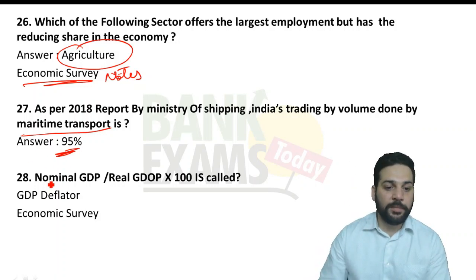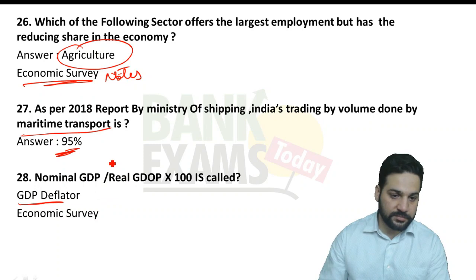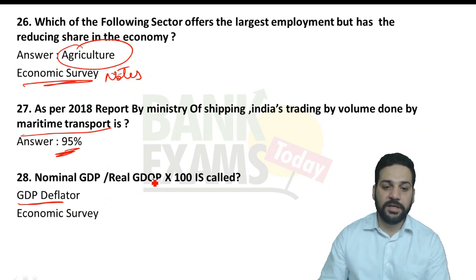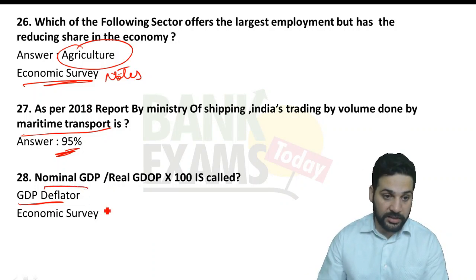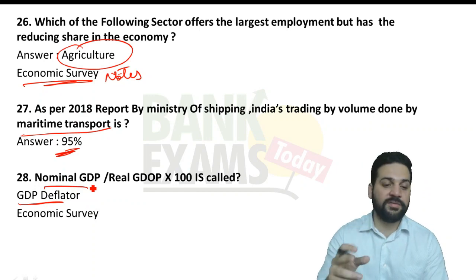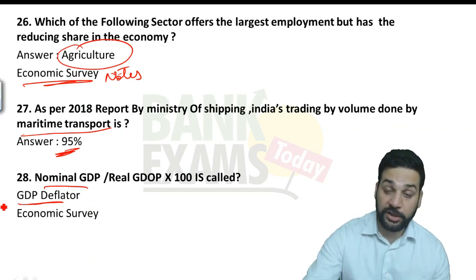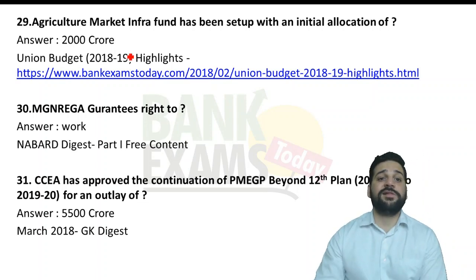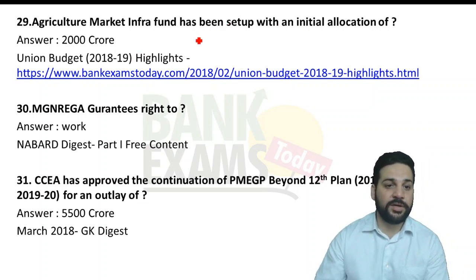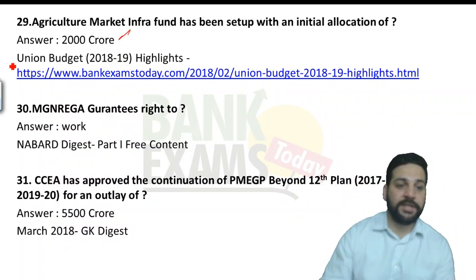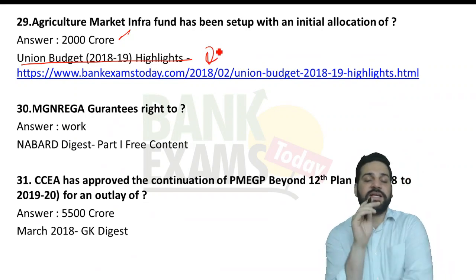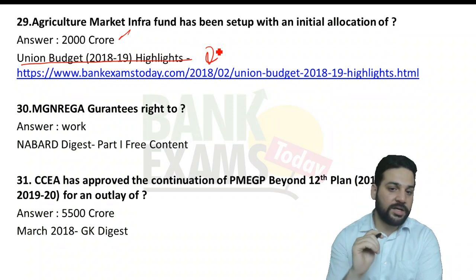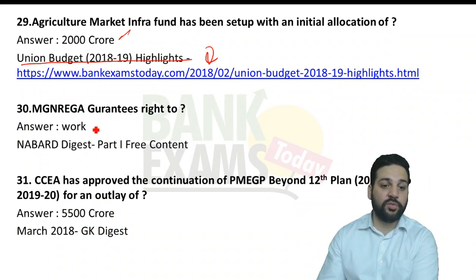Nominal GDP divided by real GDP multiplied by 100 is called the GDP deflator — one of our team members made a proper lecture on GDP deflator, and this topic also appeared in the economic survey, so we covered it twice. Agriculture Market Infrastructure Fund was set up with an initial allocation of 2,000 crores — part of Union Budget 2018-19 highlights, also sent via email to our mailing list. MGNREGA guarantees right to work — part of NABARD Digest Part 1, given away for free on this YouTube channel.